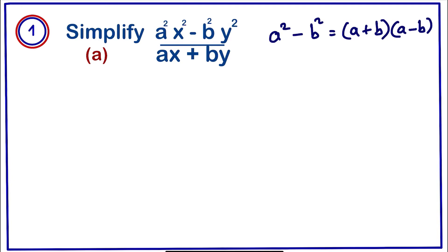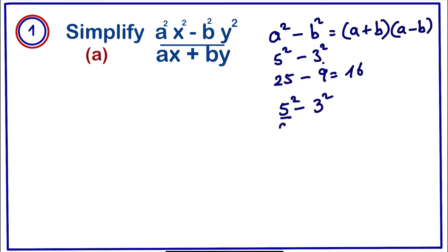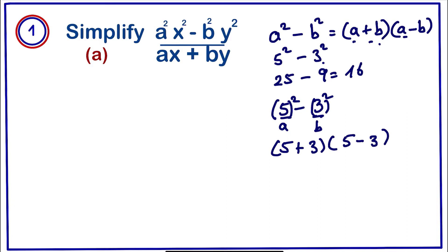For example, if we have 5 squared minus 3 squared, normally 5 squared is 25 minus 9, which equals 16. Using the difference of two squares formula, 5 squared minus 3 squared gives (5 + 3)(5 - 3), which is 8 times 2, and multiplying them together gives 16. So we can confirm the formula is correct.